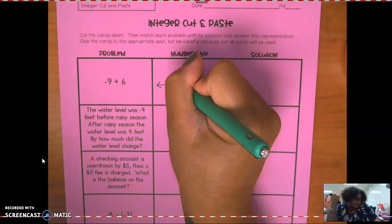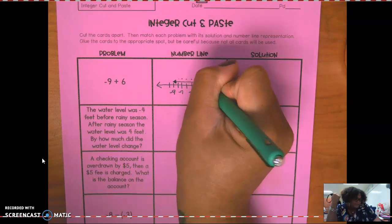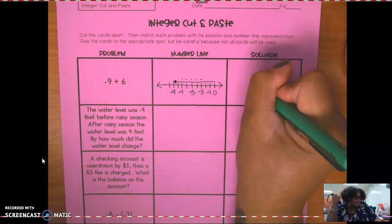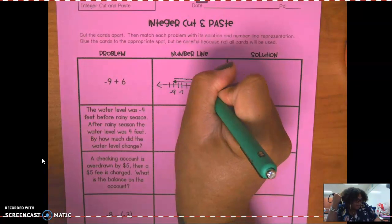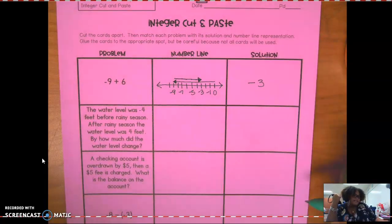Six. So starting at the nine, you're going to go one, two, three, four, five, six. Where do I end up? At negative three. At negative three. There's my answer. So I'm going to draw my line going back to the negative three, and that's where I should stop.